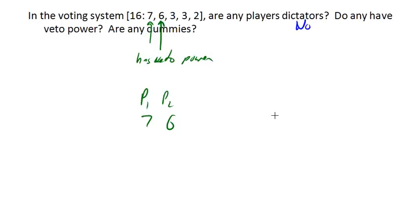What if we had player 1, player 2, player 3, and player 5? Then that adds up to 18. But if player 5 was gone, they'd still reach quota, right? They'd still have 16.